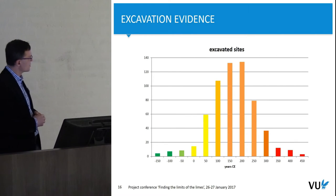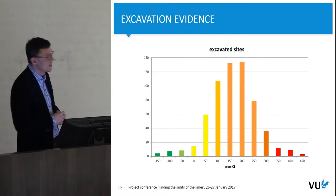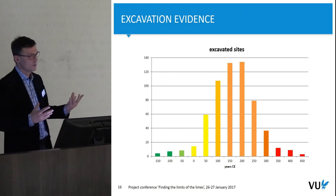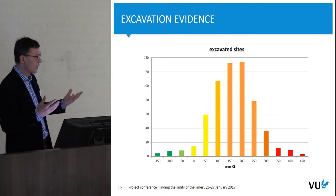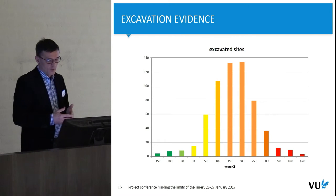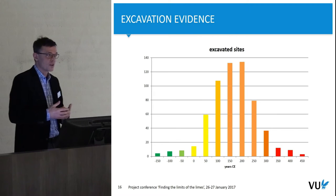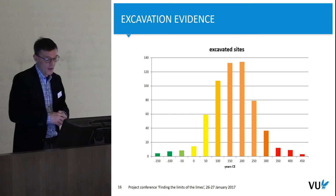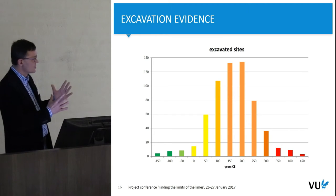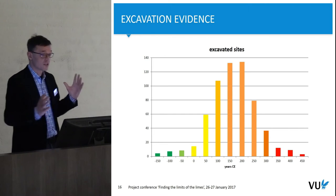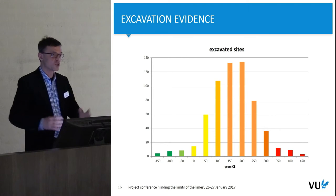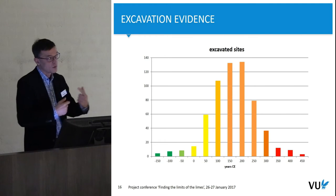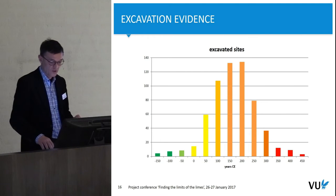When you compare this to the actual excavated sites, you see that the information coming from there is much more skewed. Apart from the possibility that the survey site dating is really very poor, it changes the picture a little bit — because if you look at the excavated sites, you would really expect there to be a very strong concentration in the Roman period and a complete decline in the late Roman period. And I don't think that is what we're seeing from the survey data.